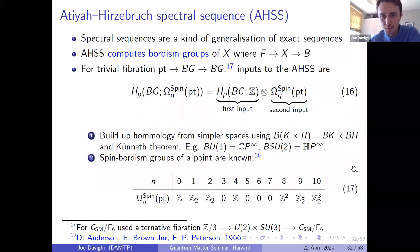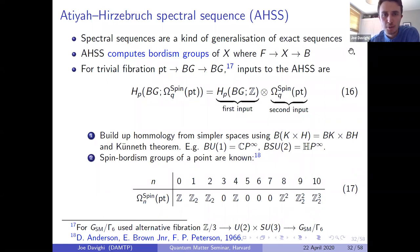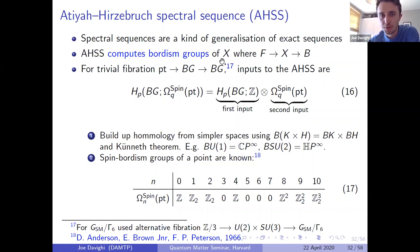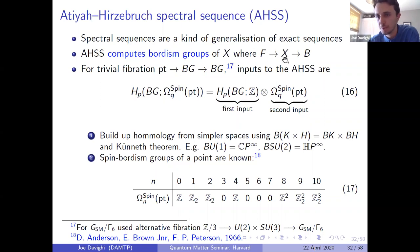The Atiyah-Hirzebruch spectral sequence is a generalization of the Serre spectral sequence computing generalized homology groups of a fibration. For most examples, it suffices to consider a trivial fibration of a point fibered over BG. The inputs are: first, the homology groups of BG with coefficients in the spin bordism groups of a point. If there's no torsion, this splits into the integral homology of BG tensored with the spin bordism groups of a point.